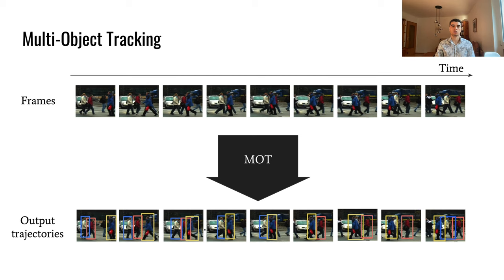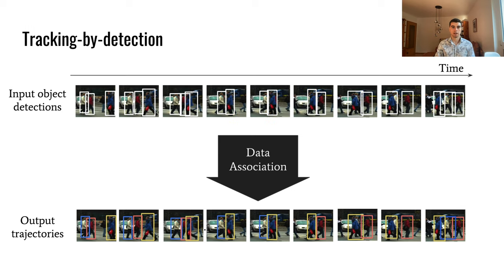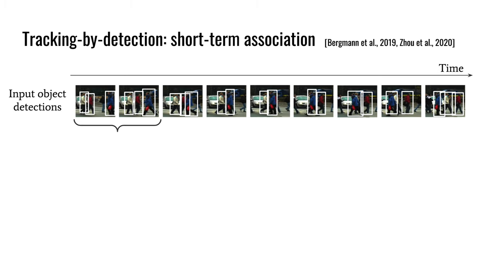Multi-object tracking is the task of localizing objects as bounding boxes and assigning them a unique identity. It's an essential task for many applications such as autonomous driving, robotics, and video analysis. In this work, we follow the tracking-by-detection paradigm. Given an input video clip with object detections in every frame, our goal is to link them into trajectories, a process we refer to as data association.